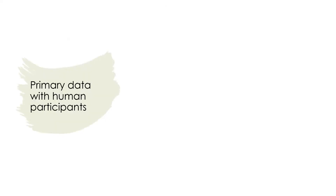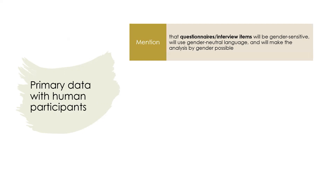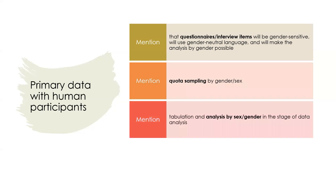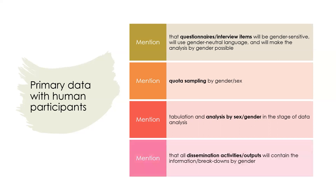In the first case, when you plan to collect primary data with human participants, most of your response should probably focus on the data collection stage and connect it to gender dimension. You could mention that you will develop questionnaires and interview items that are gender-sensitive, use gender-impartial language, and design your questions to allow subsequent analysis by gender — with specific examples for each. You can also mention using quota sampling by gender and additional categories such as race or class, and that all outputs and dissemination activities will include information on gender differences.